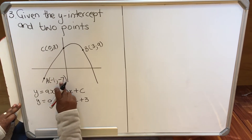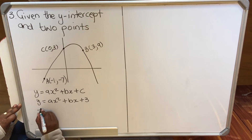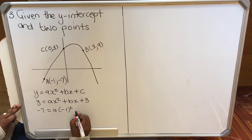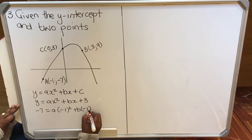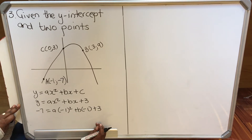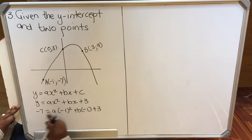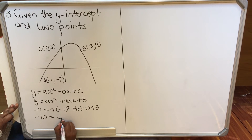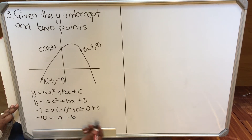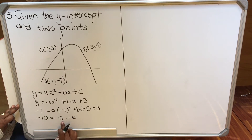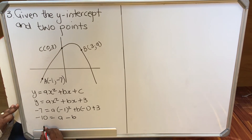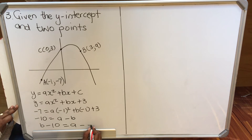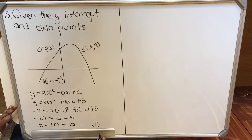Then you use the first of the other two points. Substituting x = -1, y = -7: -7 = a(-1)² + b(-1) + 3. Taking 3 to the other side: -10 = a - b. Making a the subject: a = b - 10. This is equation one.